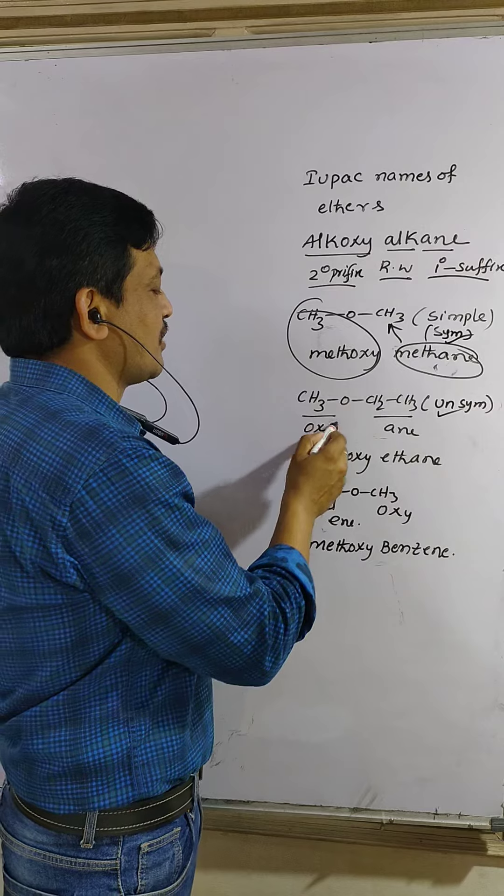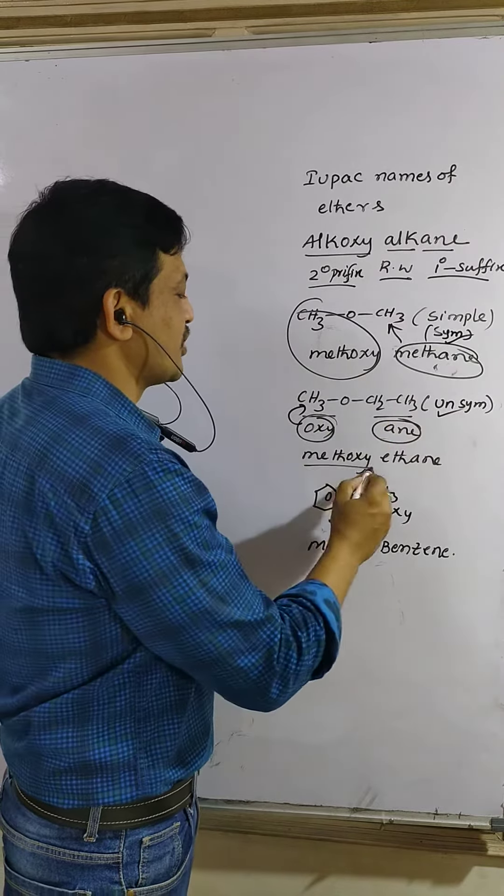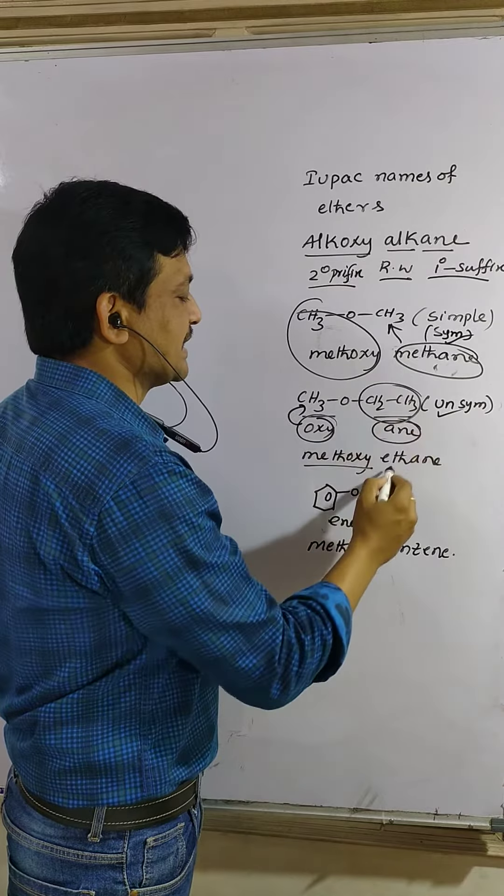Unequal, lower carbons, oxy is added and higher carbons, -ane. Methoxy ethane.